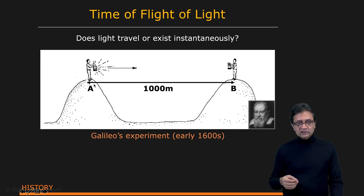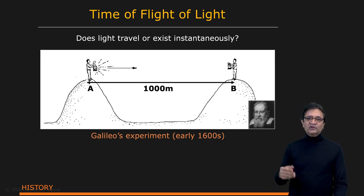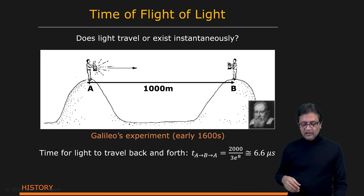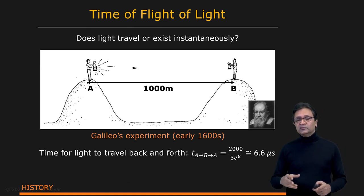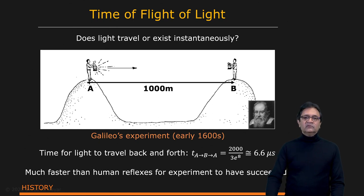Well, A to B and back is 2000 meters. It turns out that given what we know about the speed of light now, it actually takes 6.6 microseconds to travel that distance. If you look at the reaction time of humans, physical reaction time to open a shutter, and by the way Galileo was actually measuring time using his pulse back then—ambitious project, but you have to give him credit for thinking about it. The fact is that light travels so fast that even human reflexes for the experiments were just way too slow for this experiment to have succeeded.